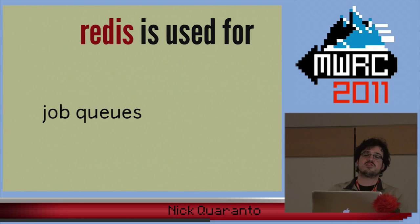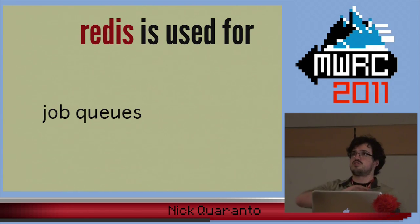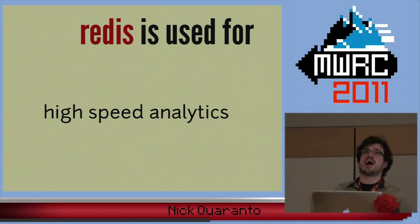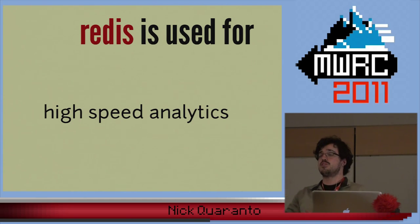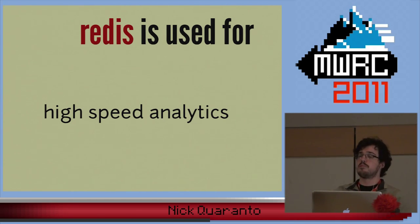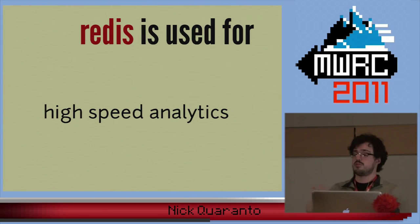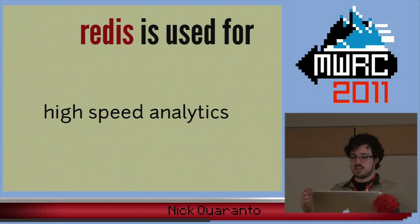If you've ever looked at the internals of Delayed Job, you'll see half of it is just trying to make sure workers aren't fighting over the same job. Redis kind of just blows that all away at the protocol level — you don't have to worry about it. It's also used for a lot of high-speed analytics. If you need to count a lot of things really fast, Redis can do that. On RubyGems.org, every time you download a gem with gem install, we're bumping around four different counters of pretty much everything you'd ever want to know about who's downloading a gem. That's really fast if you've ever had to deal with row locking and incrementing a column in MySQL or Postgres.